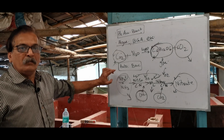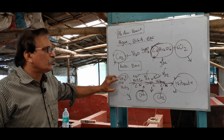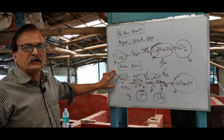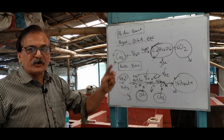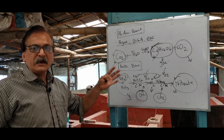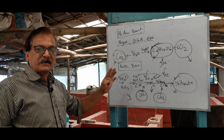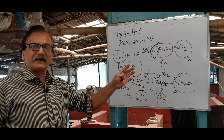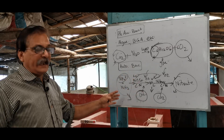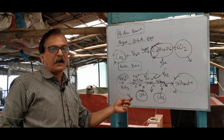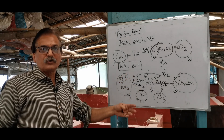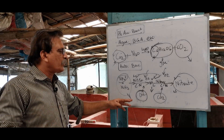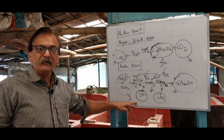In our tank, we will grow autotrophic bacteria and nitrifying bacteria. Therefore, we will grow nitrogen — ammonium, nitrate and nitrate. We will grow nitrogen in our tank.